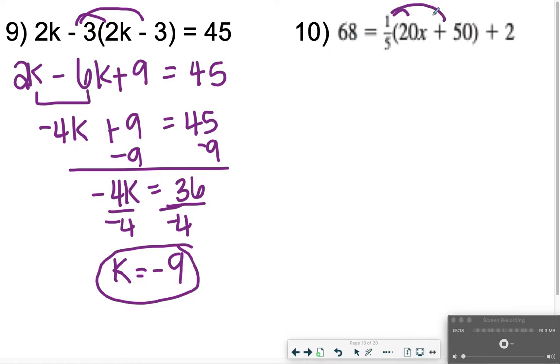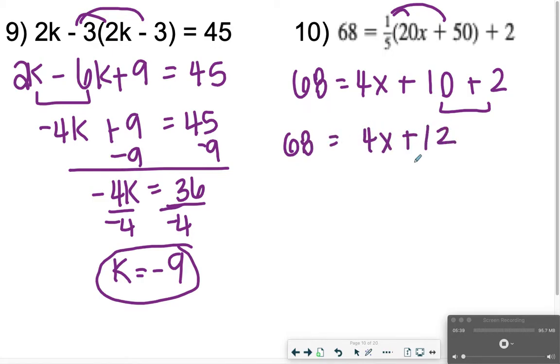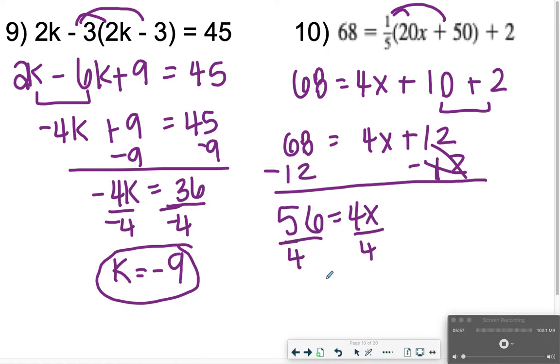For number 10, we should also be distributing the 1 fifth. So I'm going to end up with 68 is equal to 1 fifth of 20 is 4, so 4x. And then 1 fifth of 50 is 10, so 4x plus 10 and then plus 2. I know I can combine these two, 10 and 2, so I'll have 68 is equal to 4x plus 12. And then I'm going to subtract 12. So I'll get 68 minus 12, that's going to give me 56. 56 is equal to 4x. Divide both sides by 4. x is equal to 14.